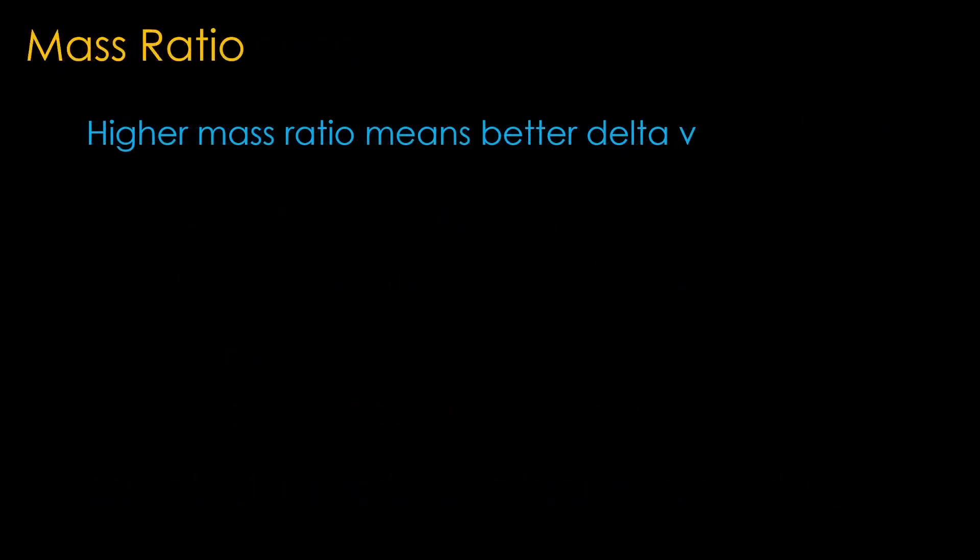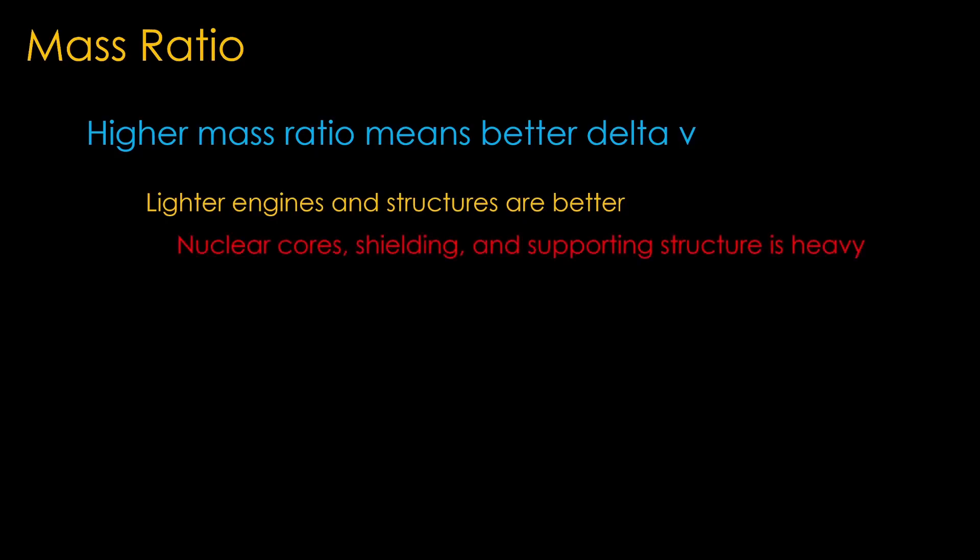Now looking at mass ratio. Higher mass ratio yields better delta V. The first rule is that lighter engines and structures are better. Unfortunately, everything in the nuclear rocket is heavy. The nuclear core is heavy, all of the shielding is heavy, and the supporting structure is heavy. All that mass means the ending mass of the rocket is greater.